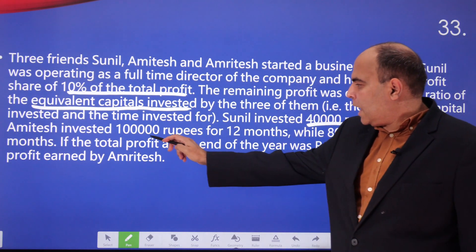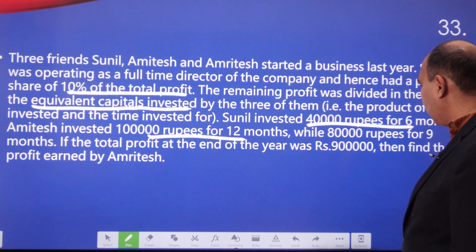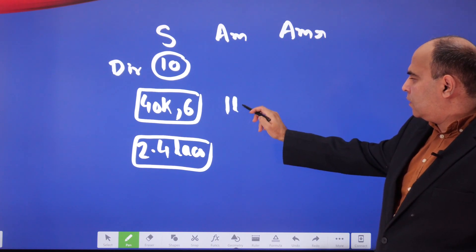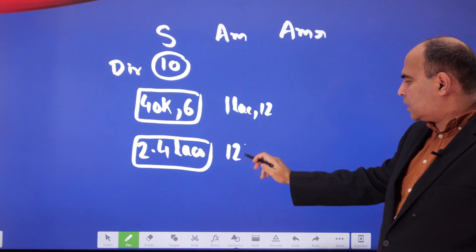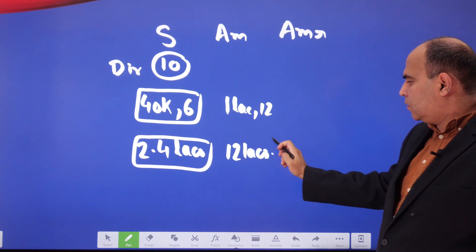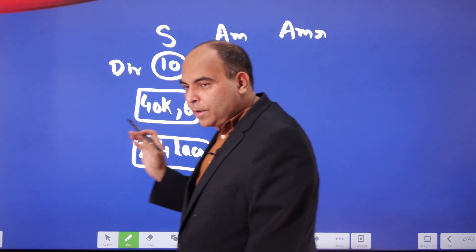Amitesh invested 1 lakh rupees for 12 months, so his equivalent capital is going to be 12 lakhs for one month.